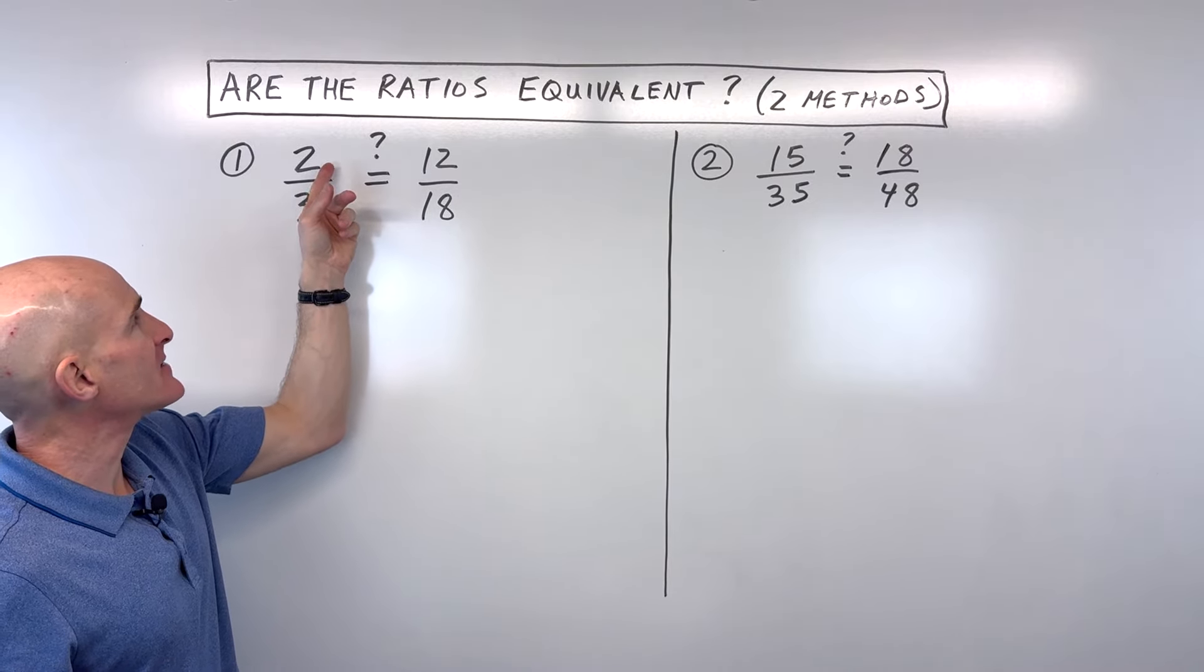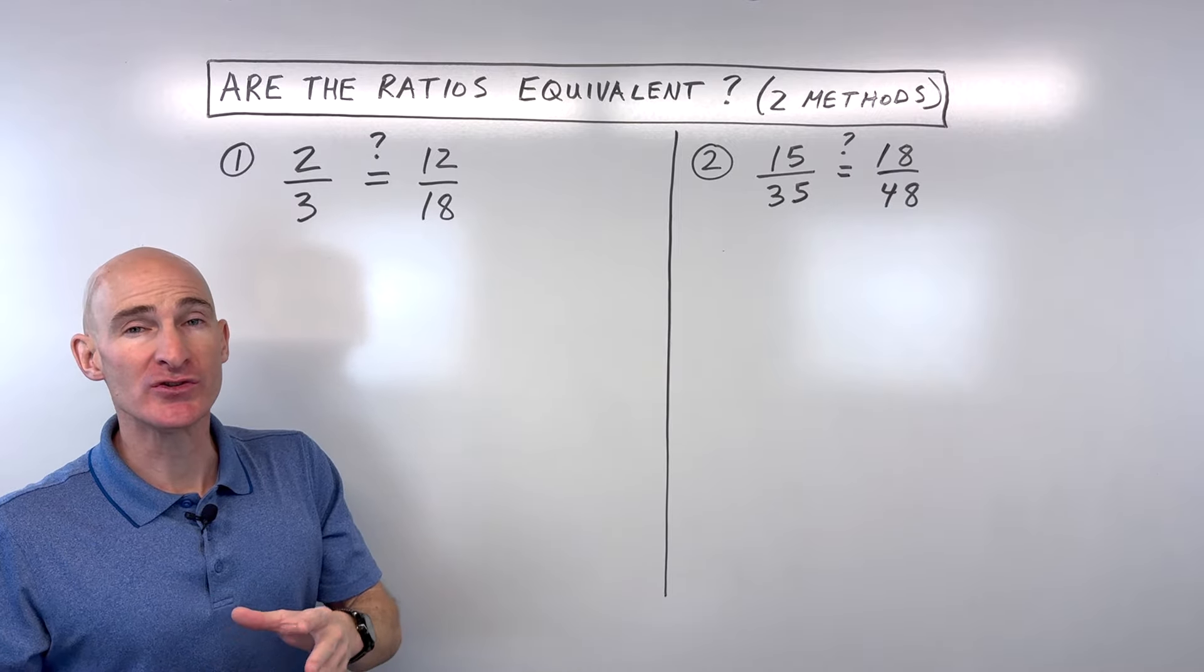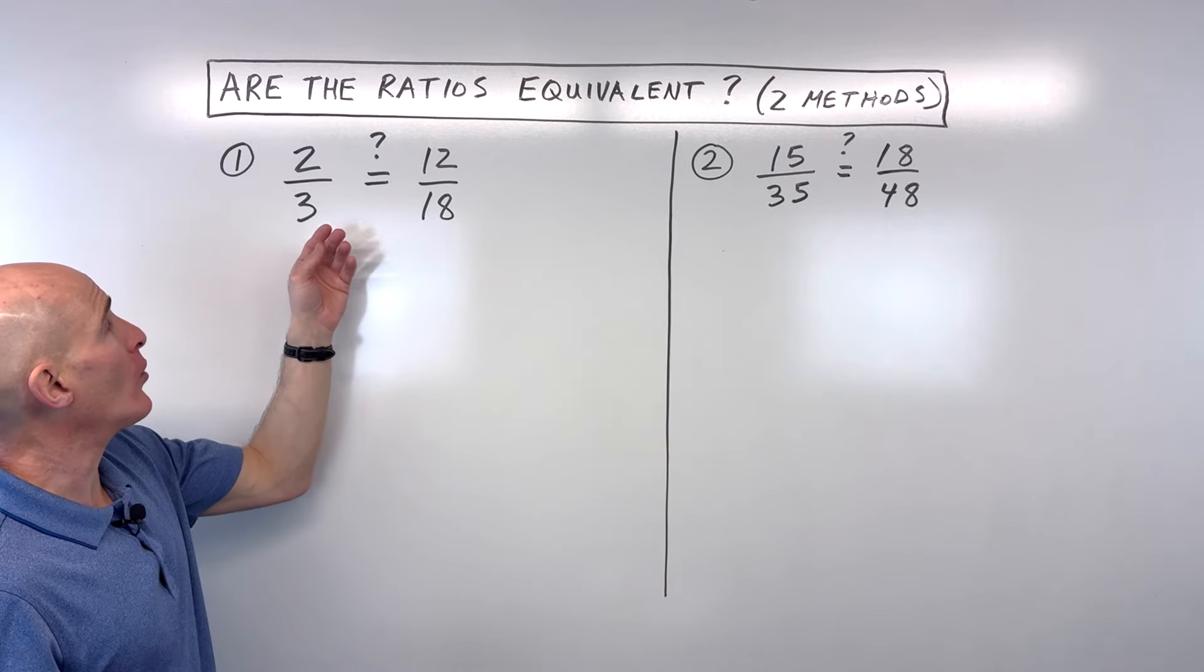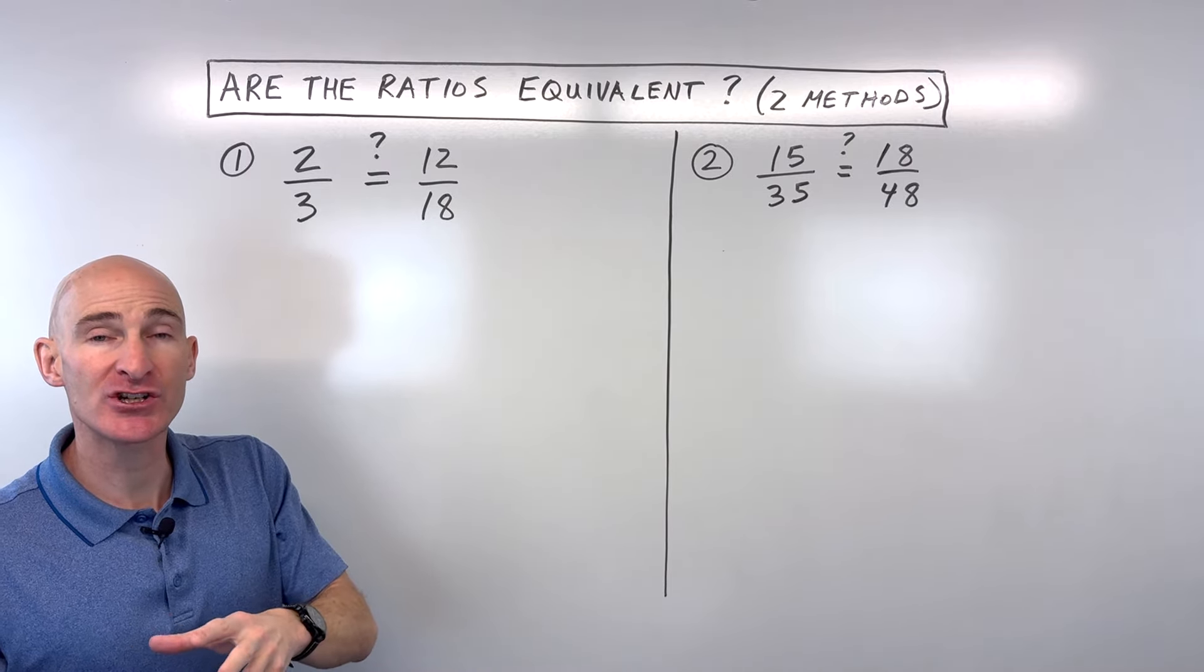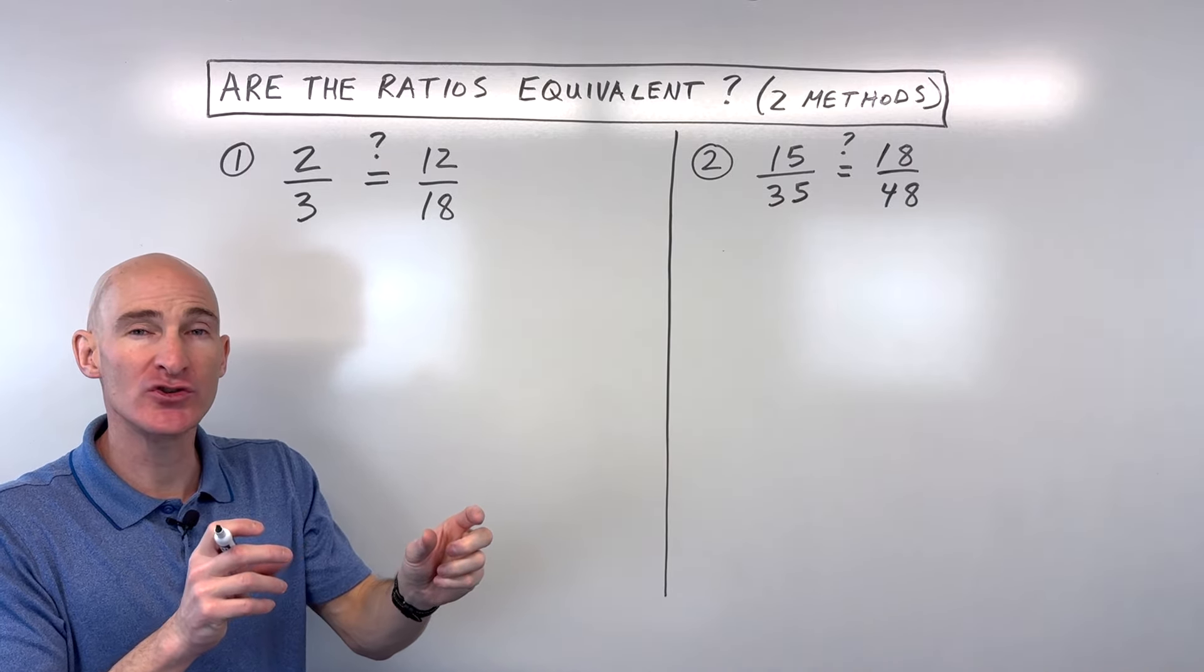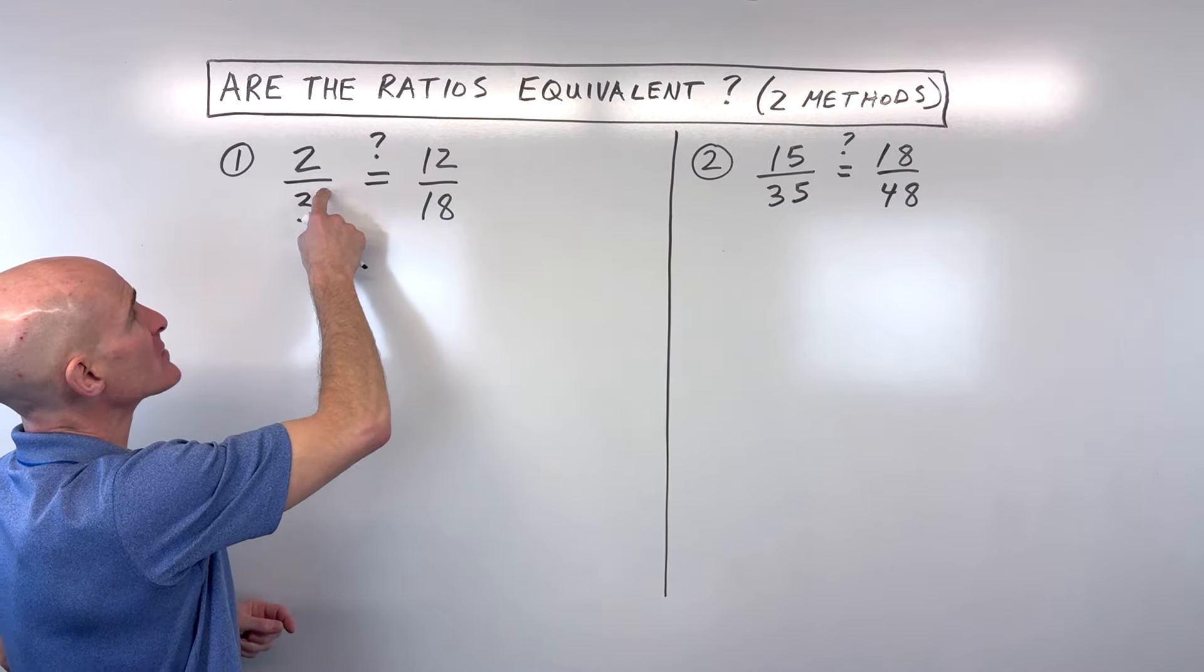So when you talk about a ratio, it's like you're comparing two quantities like teachers to students or boys to girls, right? Or any two quantities you're comparing to one another. And you can write it as a fraction, or you can put it with a colon in between the two, or you can even write the word two, T-O. But in general, ratios are written as fractions like this.